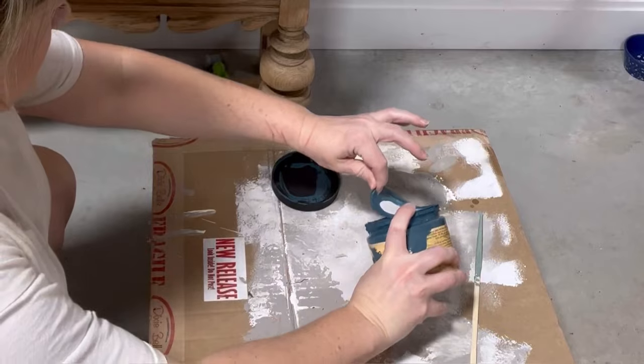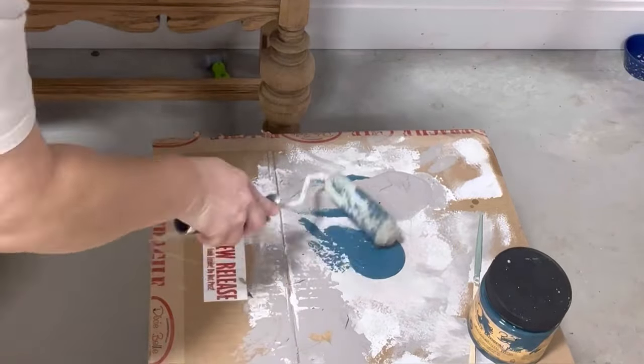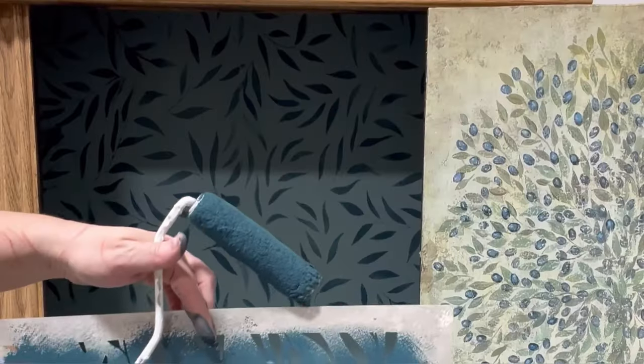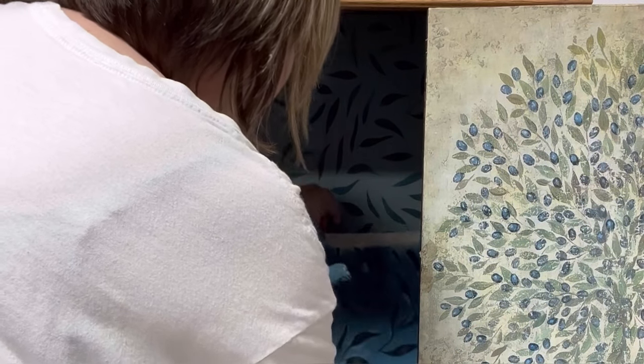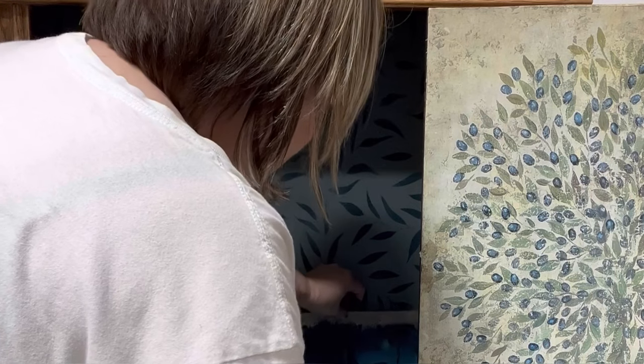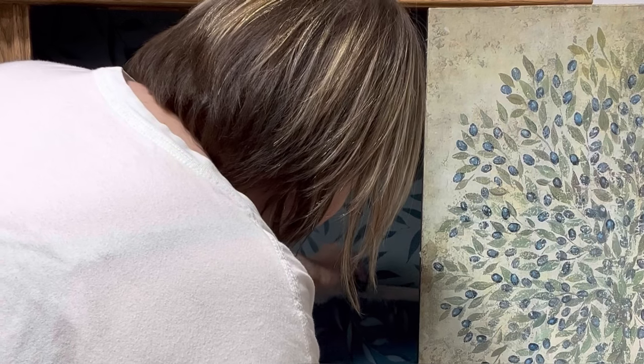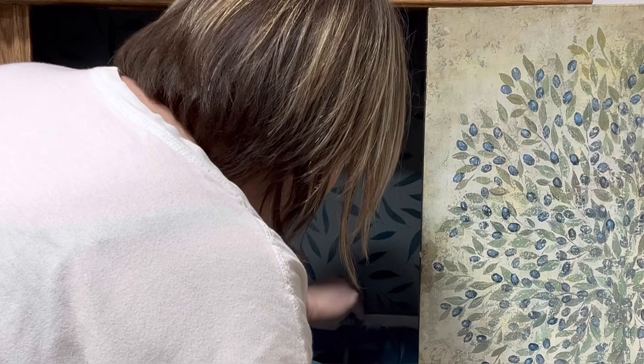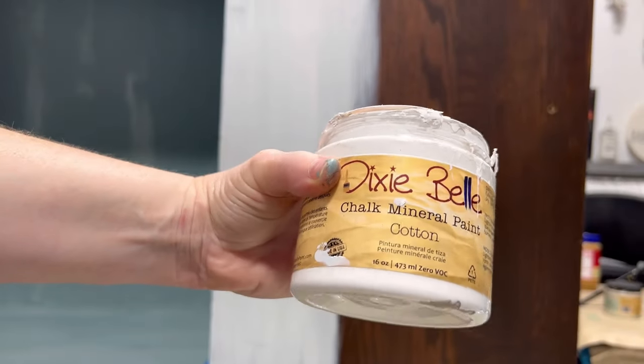When using a hard stencil like the mylar stencils from Dixie Bell, I like to apply them using a roller. I poured out some of my Antebellum Blue onto a piece of cardboard box, then use a roller to roll over that paint and roll off any excess. The key to not having bleeds when you're painting over stencils is not to apply too much paint and not to apply too much pressure. I hold my stencil up and lightly roll my roller over top of the design, and I try to touch some places heavier than others to give it a nice distressed look.